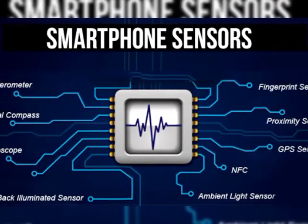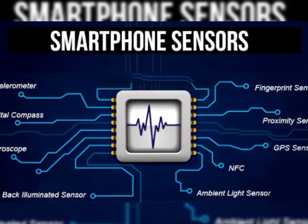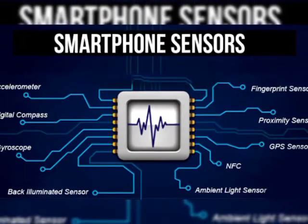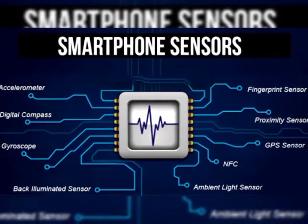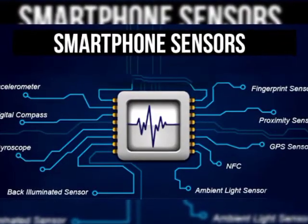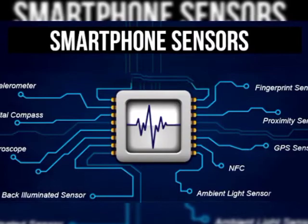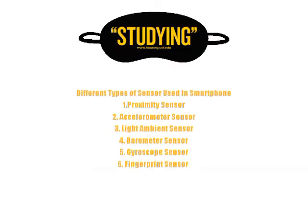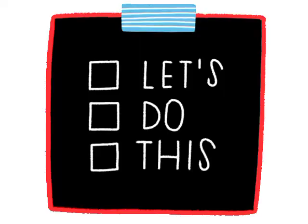Smartphones use different kinds of sensors like proximity sensor, compass sensor, gyroscope sensor, accelerometer sensor, ambient light sensor, barometer sensor, and fingerprint sensor. So let's start the video and briefly discuss all of these sensors.